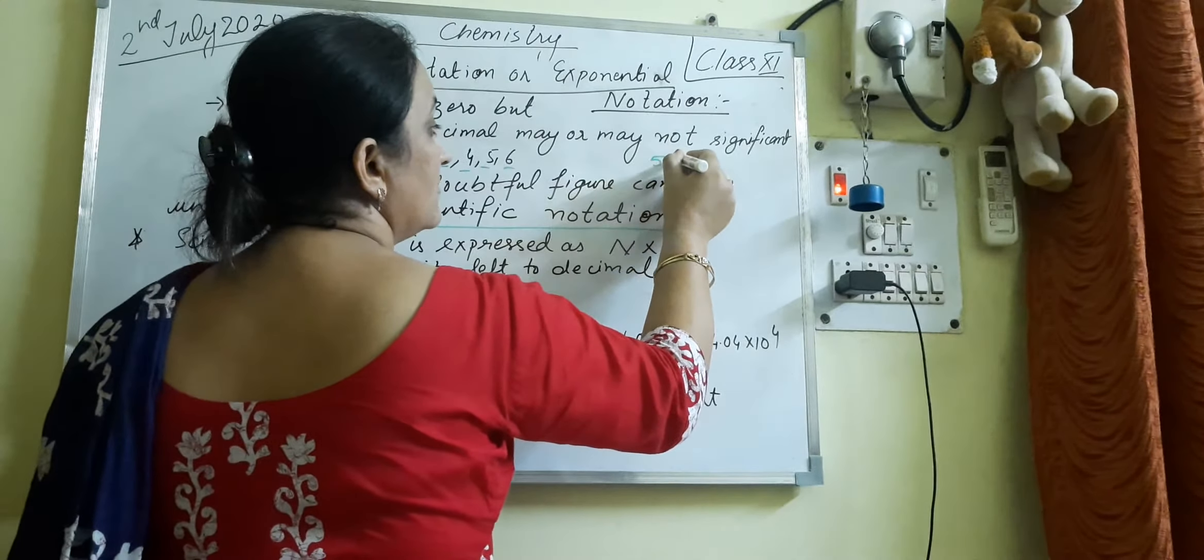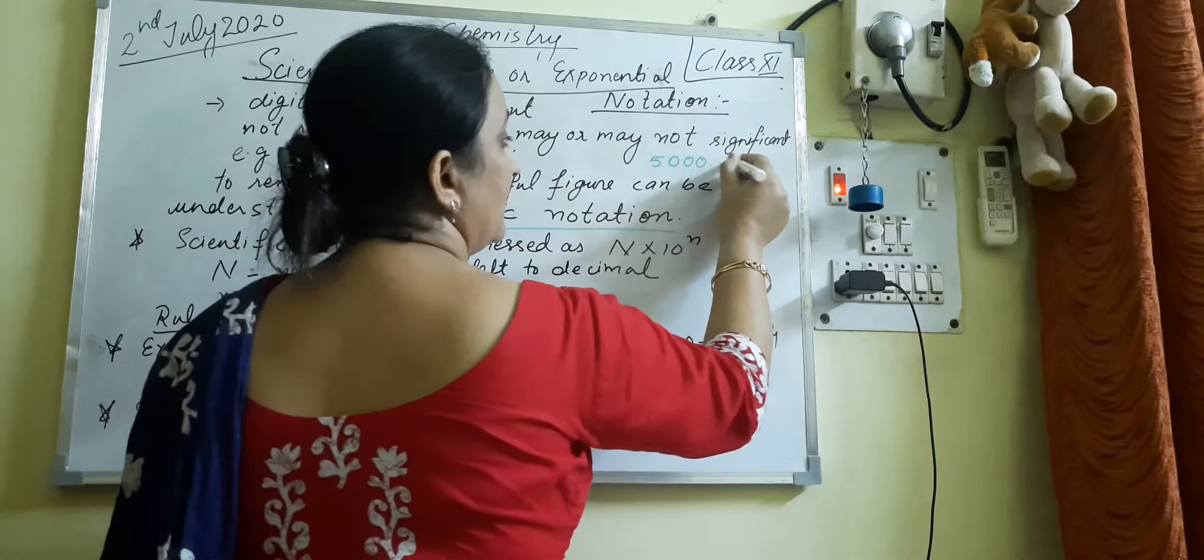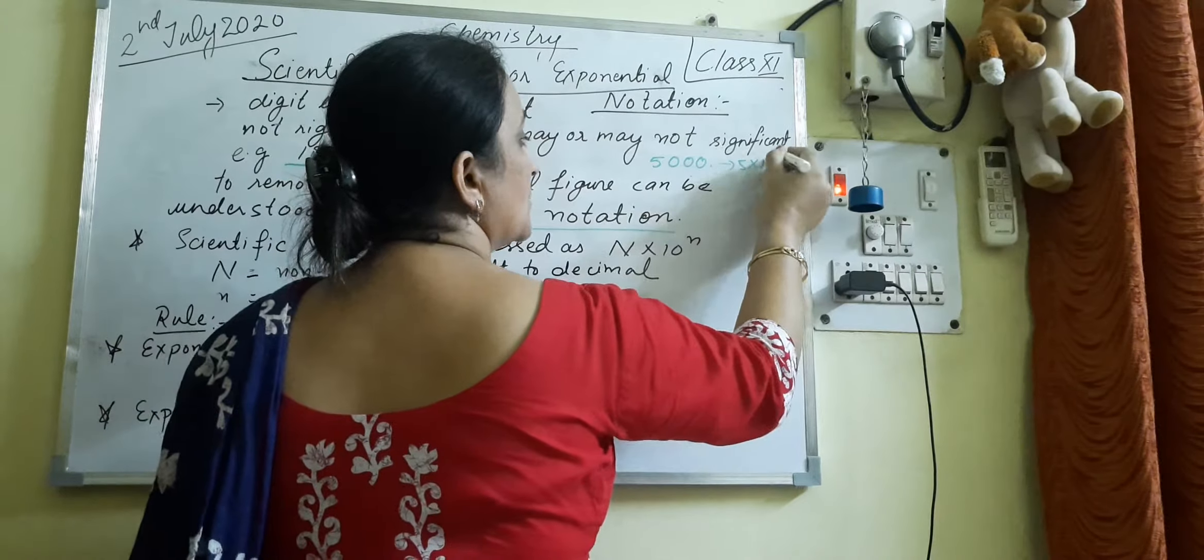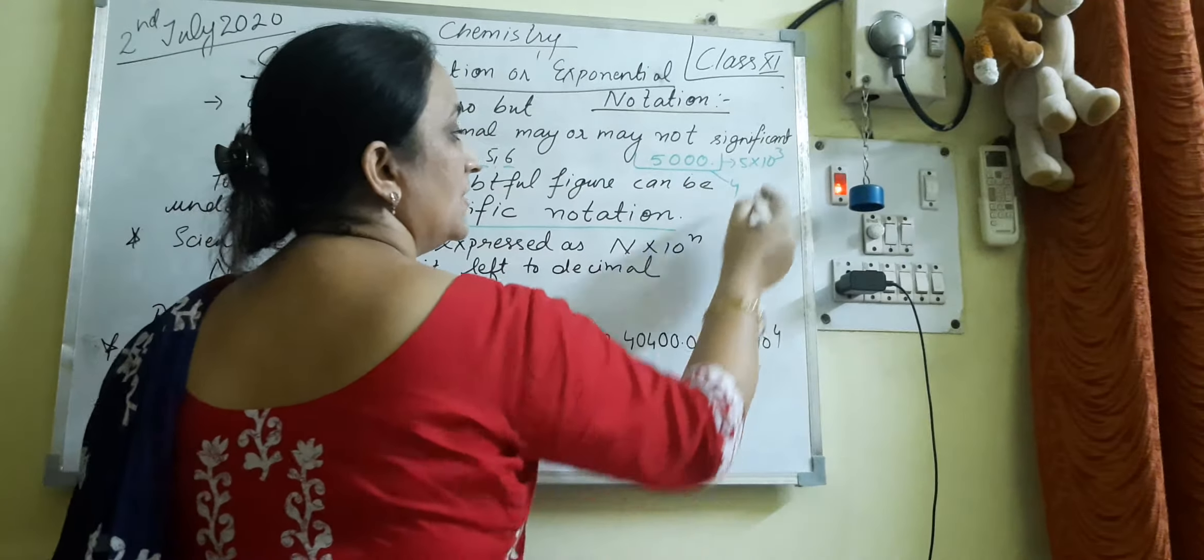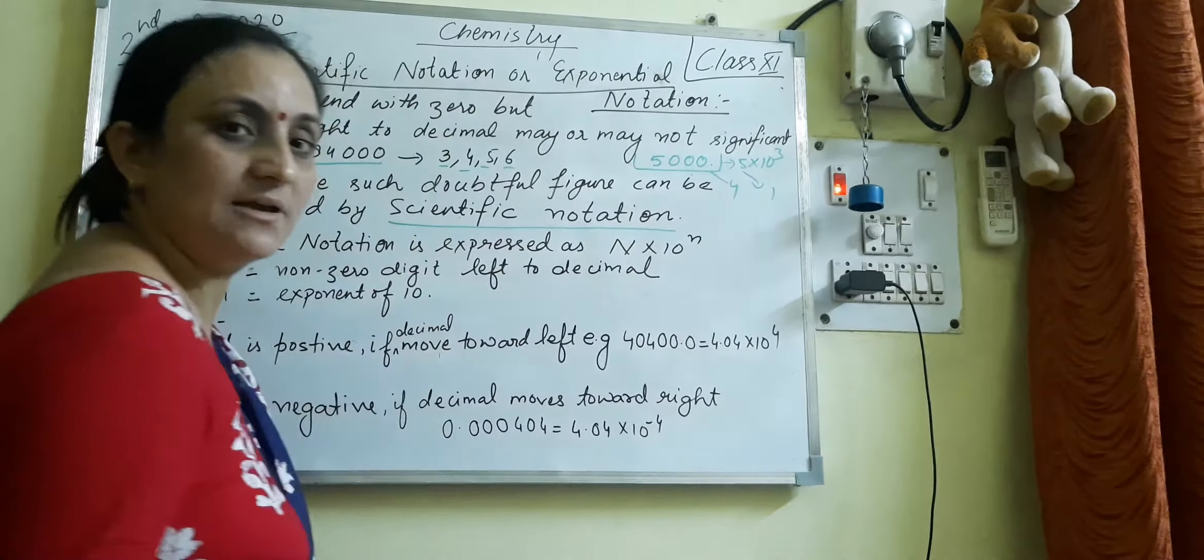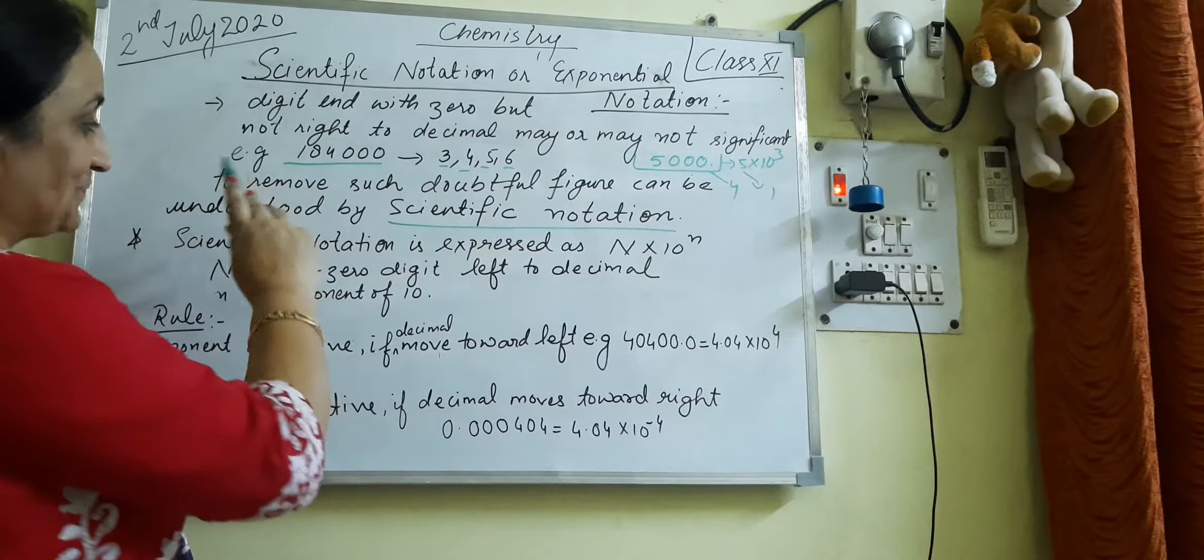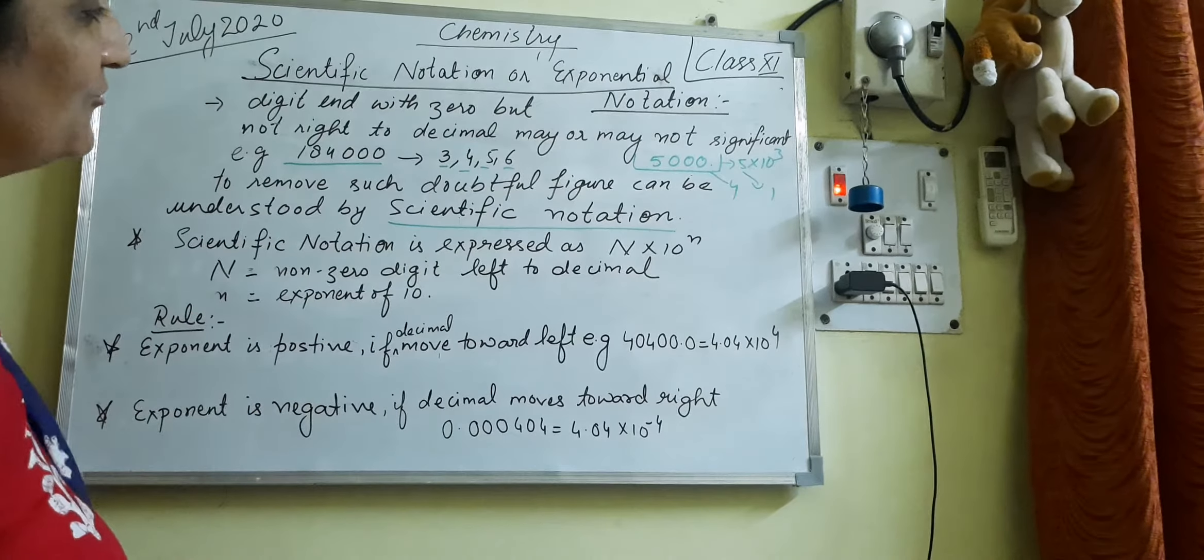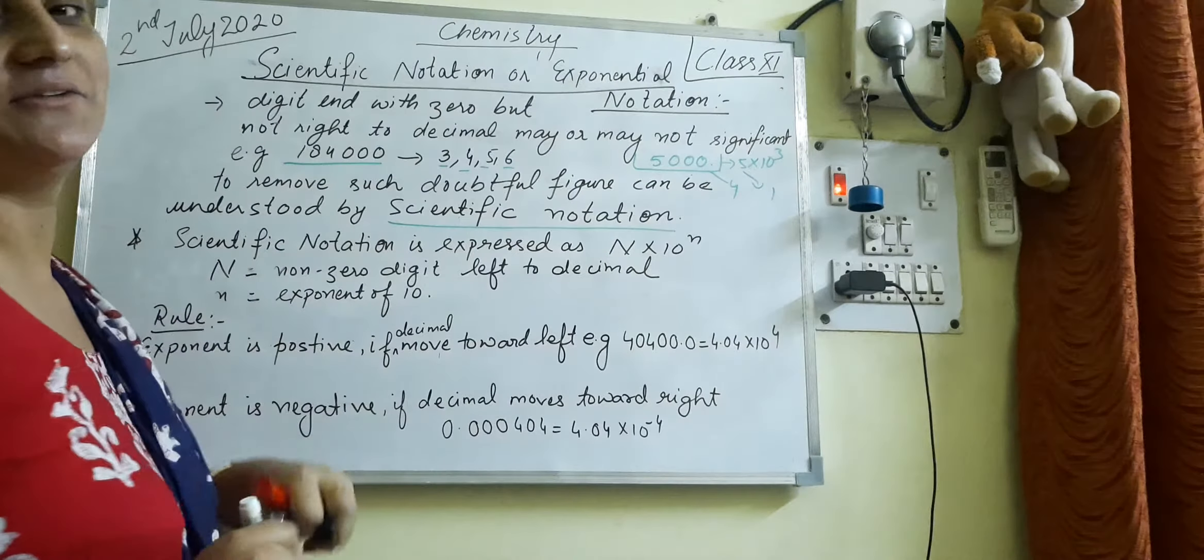As we've done in our previous example, our example is 5000 point. We can also write that figure in such a way: 5 into 10 raise to power 3. In the first figure we might say there are four significant figures, but here there is one significant figure. To remove such type of doubtful figures, we introduce the concept of scientific notation.